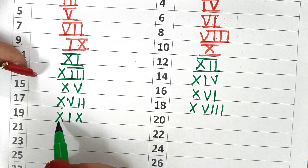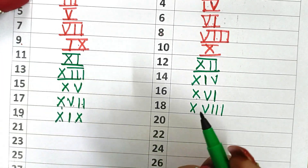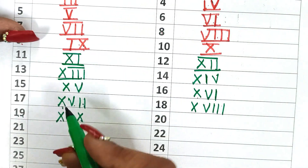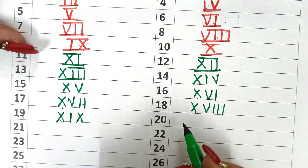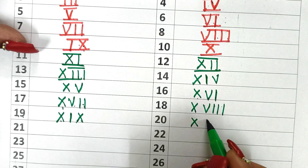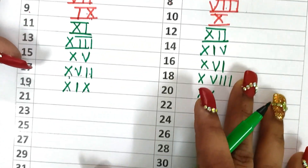I have written first 10 then I have written 9, as usual as we write 10 minus 1. Now write 20. How do you write 20? 10 plus 10 — X, X — this is XX.